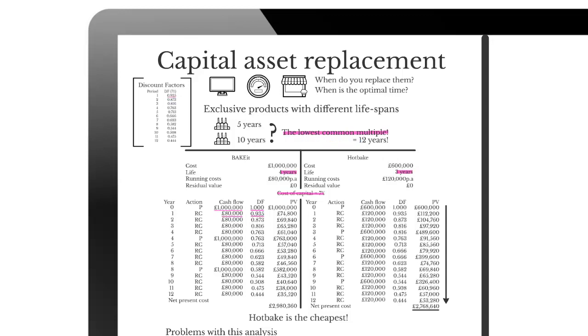We had two different ovens, the Bake It and the Hot Bake, and we used the lowest common multiple method to calculate the cost of these ovens over 12 years and found that the Hot Bake oven was the cheapest after 12 years. If you would like to watch that video, then please like and subscribe to the Astranti YouTube channel where you'll be able to access it, or visit the website www.astranti.com.